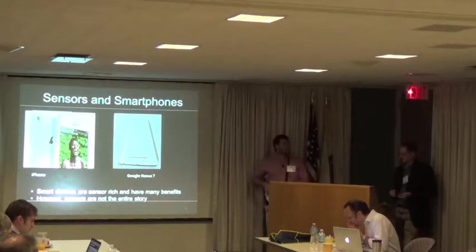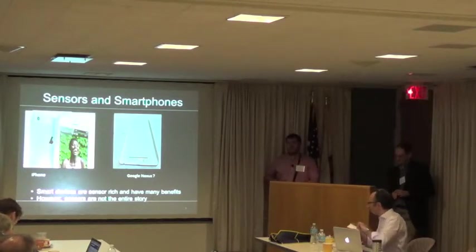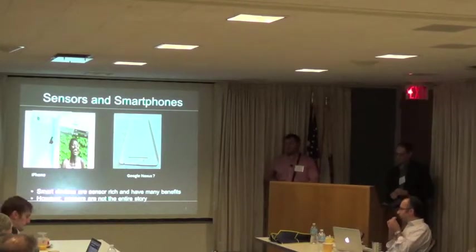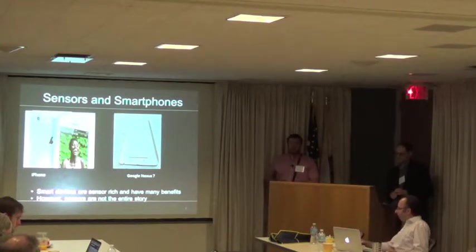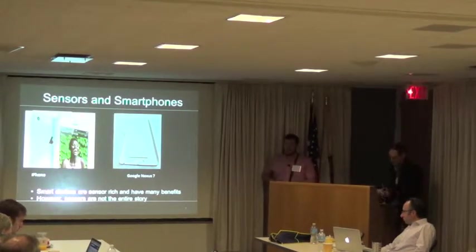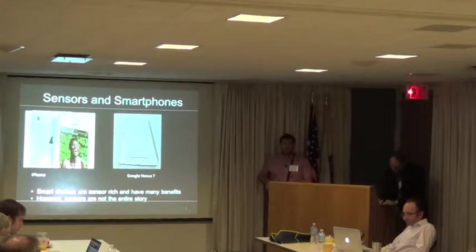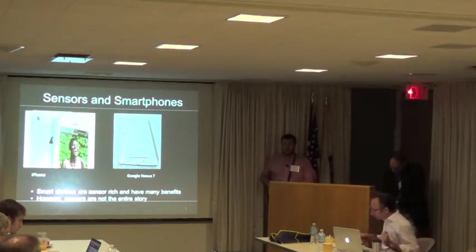A major reason why these smart devices can support so many tasks is because they include all types of embedded sensors — light sensors, cameras, accelerometers, gyros, GPS, Wi-Fi. We've reached the point where sensing technology is cheap, it's small, it's ubiquitous, and we're getting better sensor fusion algorithms, so we can do a lot of cool tasks.